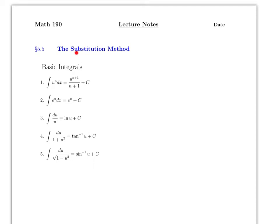The idea is you're going to do a substitution so that you will get something that looks like one of these five forms, and then the integral will follow from that. What the substitution method does is you make a substitution — usually called u — so that's why this is usually called the U-substitution method. Remember the interval has to stay the same, but by doing a substitution you're going to make it look like one of these forms.